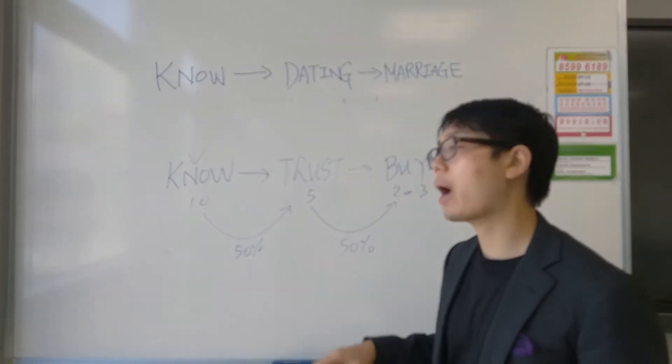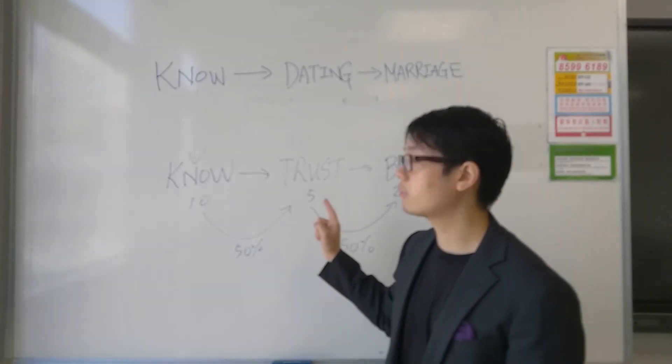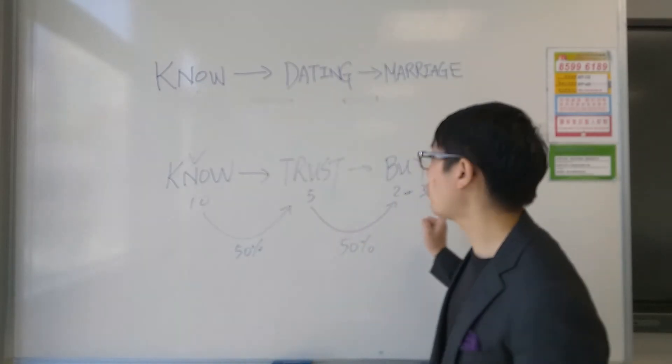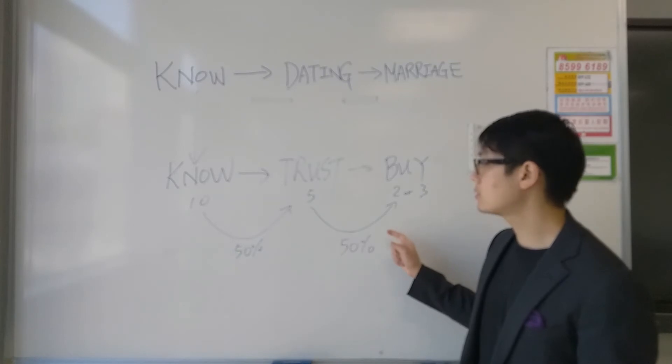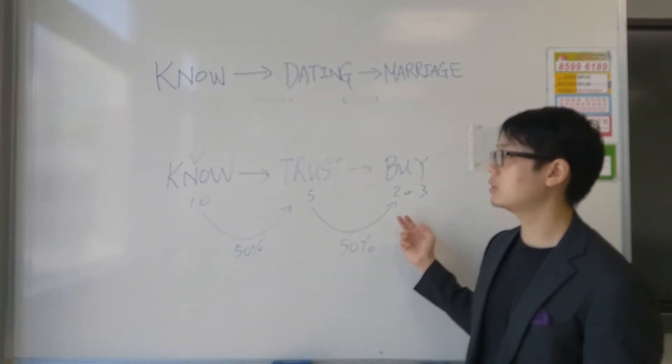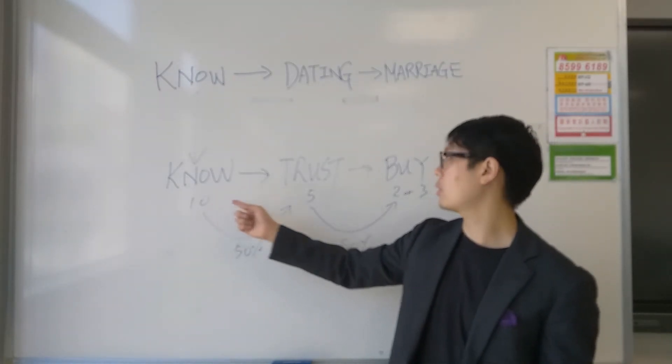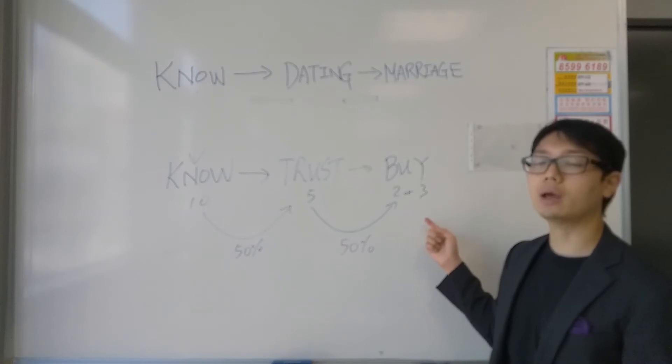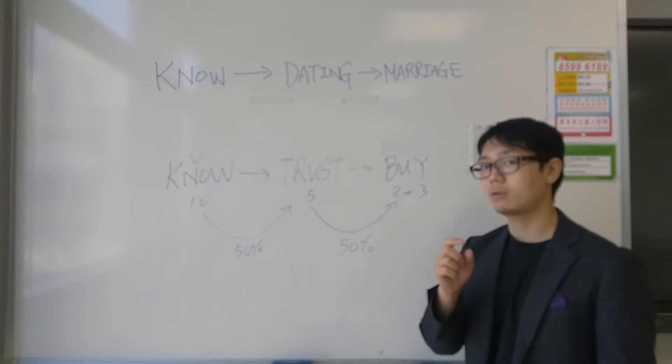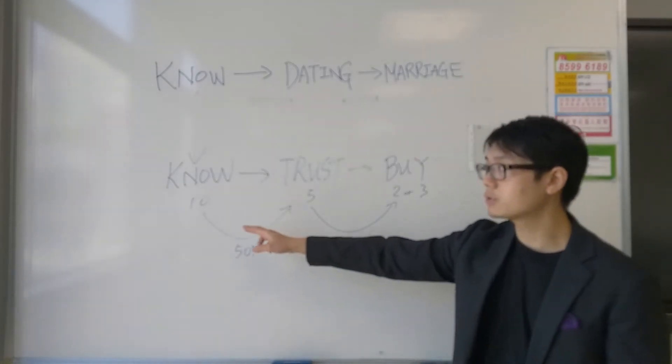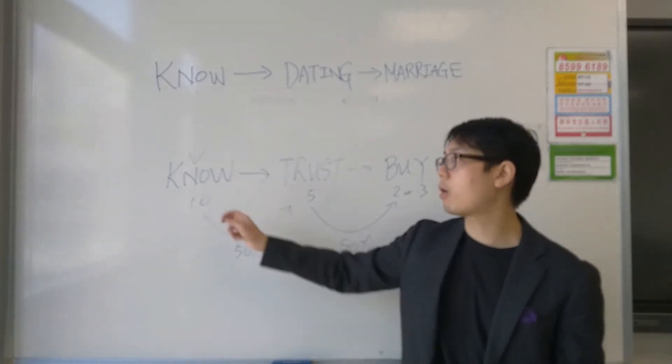Now there are 2 properties about this relationship that we want to focus on today. Now the first thing is, in order to get someone to buy from you, and since the conversion rate is from 10 people knowing you until 2 or 3 people who buy from you at the end, your job as a salesperson for your business is to make sure that you get as many people to know about you as possible.